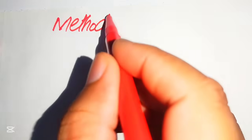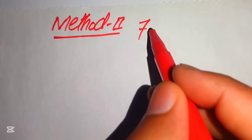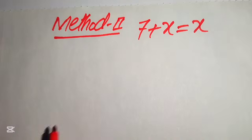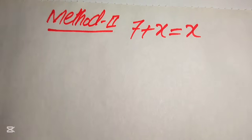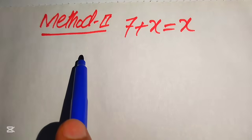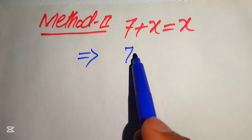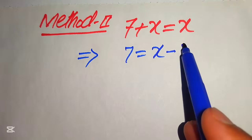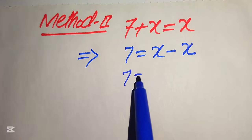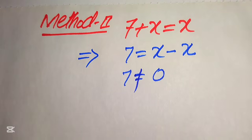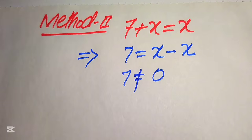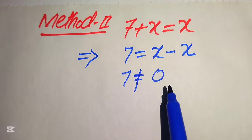In the second method, we copy the given statement: √(7 + x) = √x. Here we directly check whether a value of x can exist. When we move x to the right-hand side, the +√x on the left becomes −√x on the right, and √x − √x = 0. So we get 7 = 0.